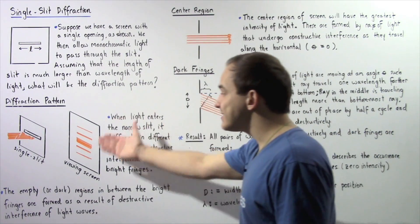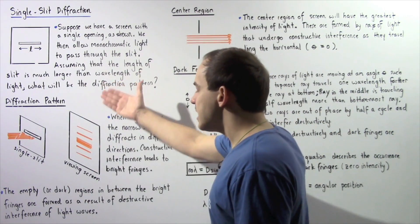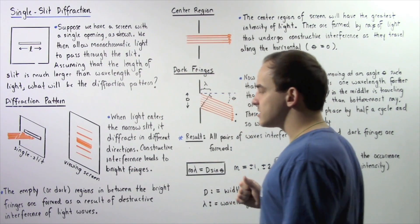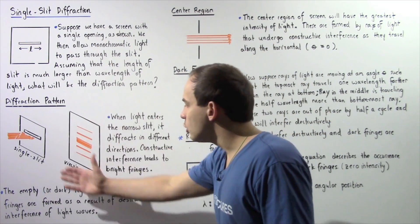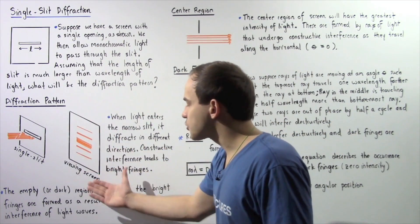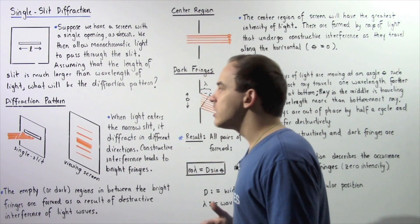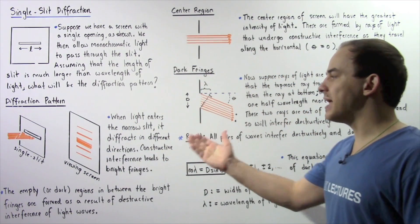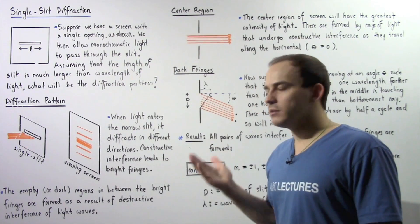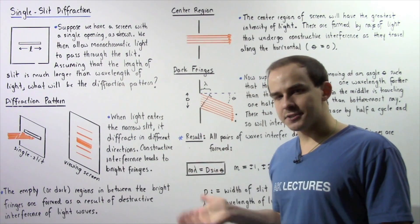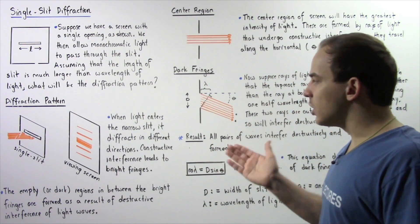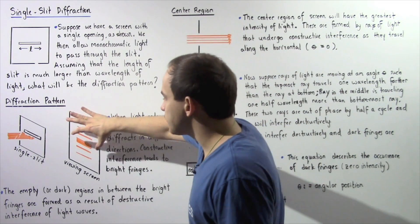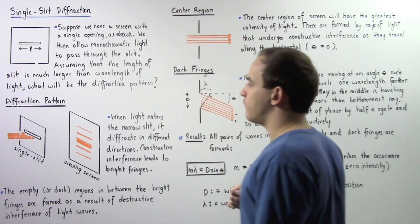This is the diffraction pattern that will be observed for the single slit. The viewing screen essentially shows the diffraction pattern formed as a result of the single slit experiment. Now let's look more closely at how the center fringe is formed.